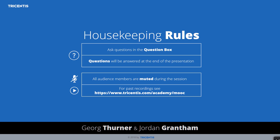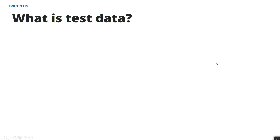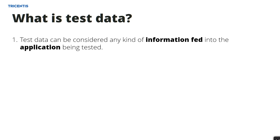We have a lot of things to cover today. I hope you're very interested in the way we handle test data at Tricentis. Before we go into the demo, let's talk briefly about what test data is. First of all, test data is any kind of information you thread into the application being tested — anything you need in order to run your tests. They can be manual or automated. You need the test data to be able to run your test cases.